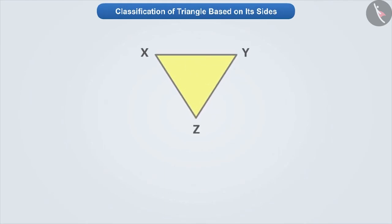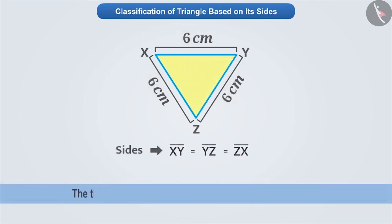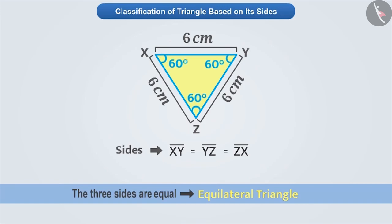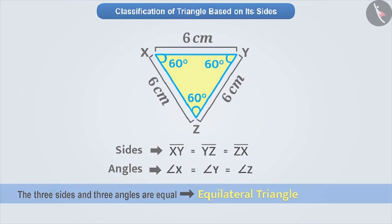Now, look at this triangle. On measuring this triangle, we find that all its three sides are equal. A triangle whose three sides are equal is known as an equilateral triangle. If we measure its angles, we find that all the angles of such a triangle are also equal. That is, all the sides and all the angles of an equilateral triangle are equal.